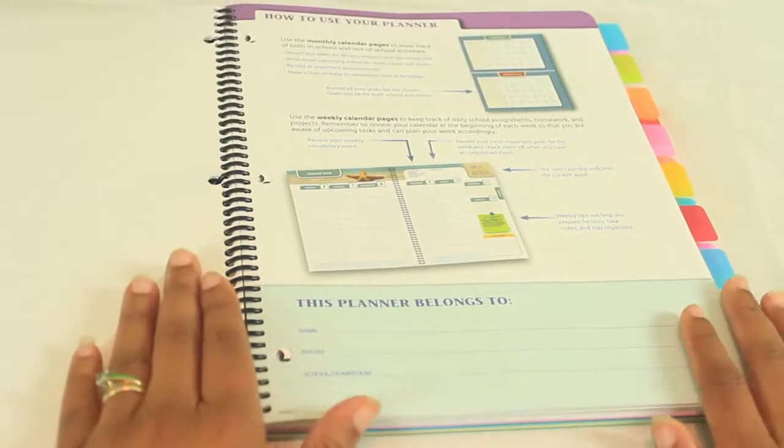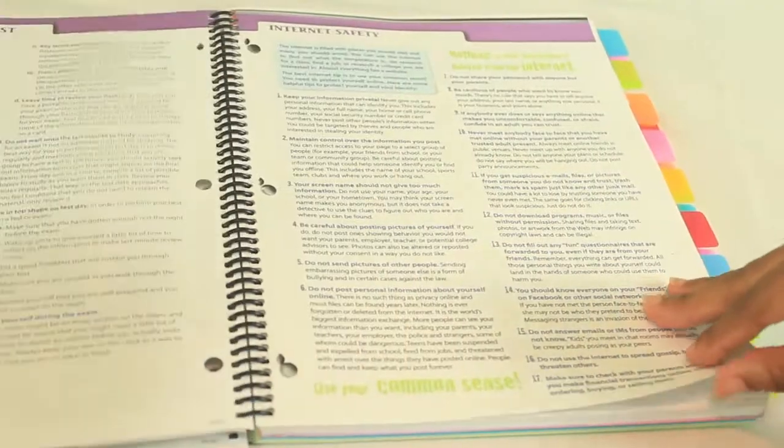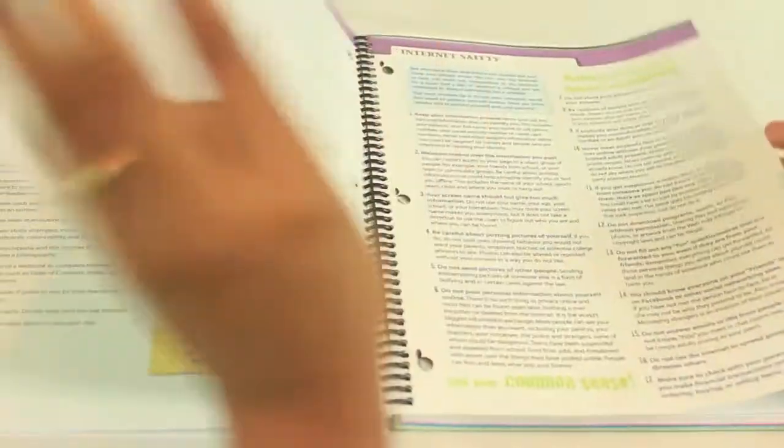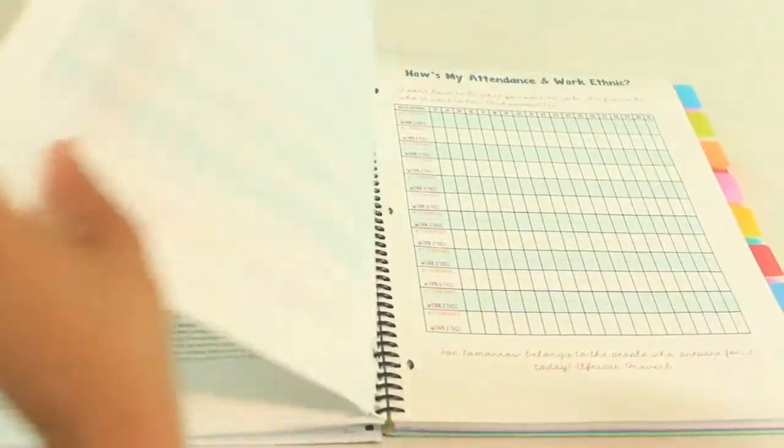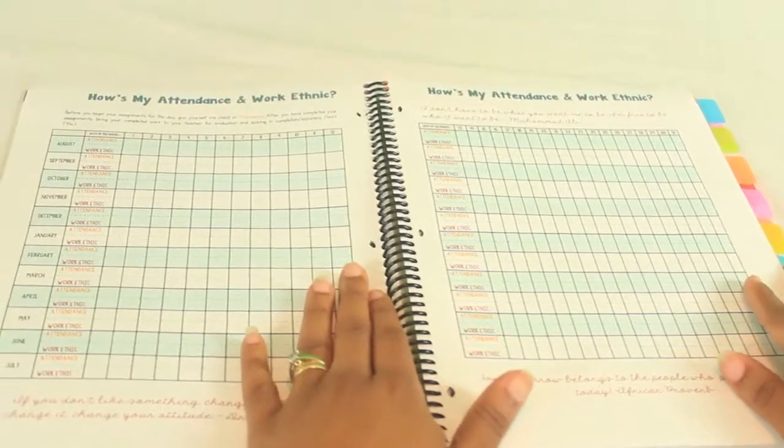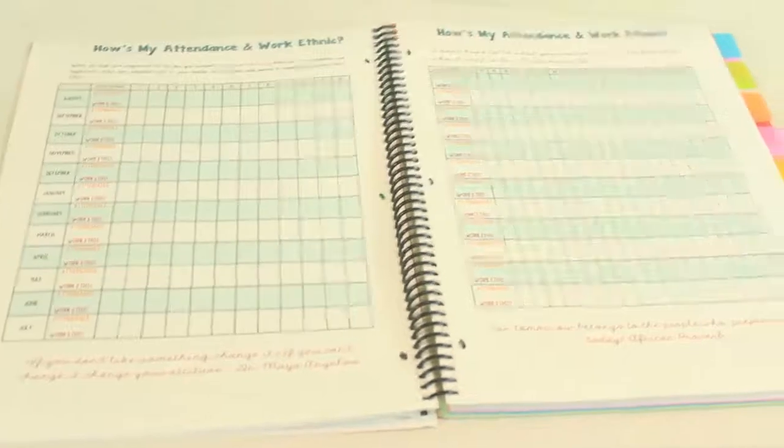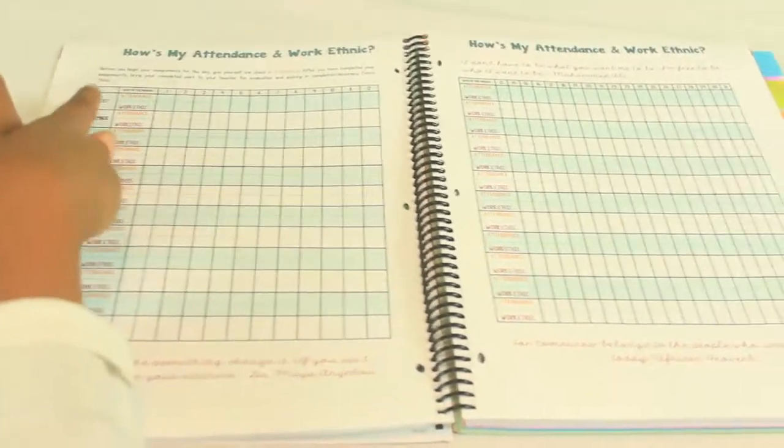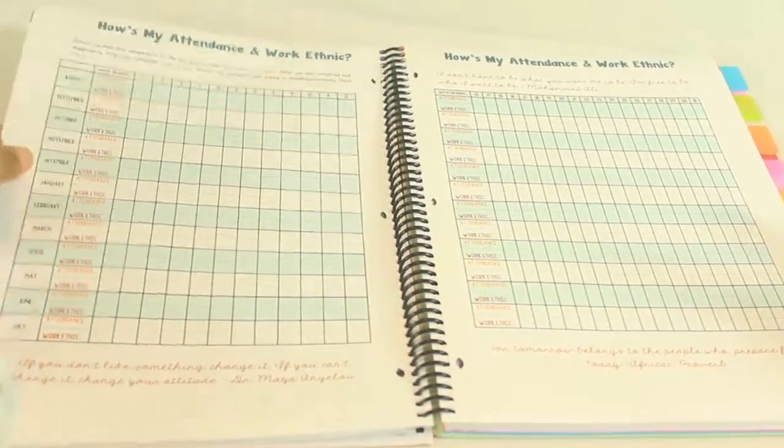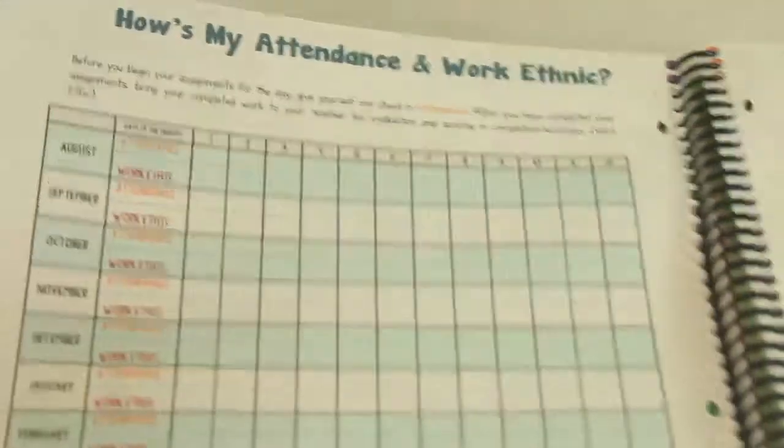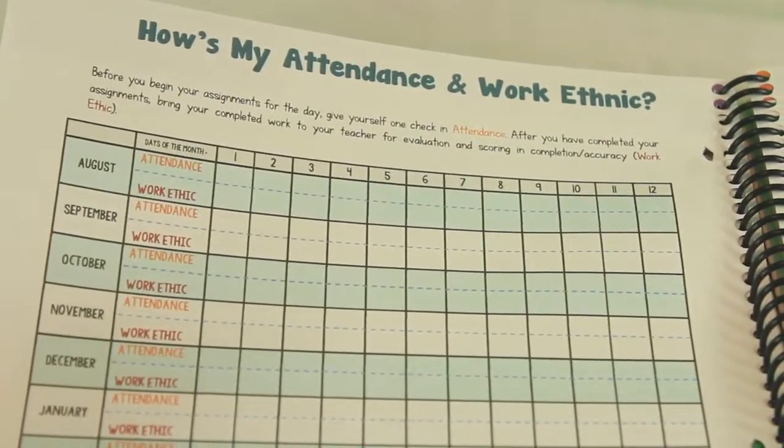So now we're at the front cover of the planner where it would have started if I didn't add this into it. So this is your typical study skills, internet safety. Now, one of the things that I like to have at the beginning is something that I put together. And so I just call it how's my attendance and work ethic. So basically, and we don't start school until later in August, but I'll read it to you. It says, before you begin your assignments for the day, give yourself one check in attendance. So I have him keep up with his own attendance in this way.